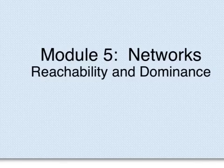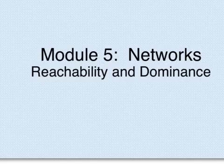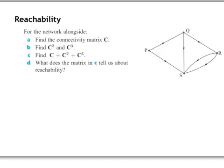Today we're going to have a quick look at a couple of examples relating to reachability and dominance as applications of directed networks. The first question here relates to reachability. For the network that we've got drawn alongside, the first question asks us to find the connectivity matrix C.